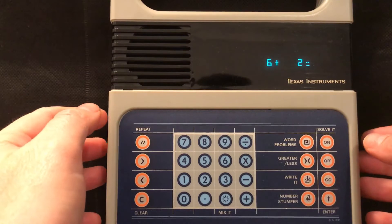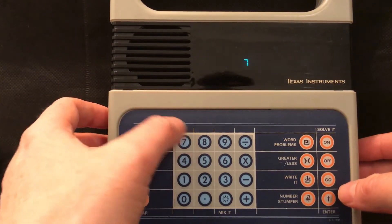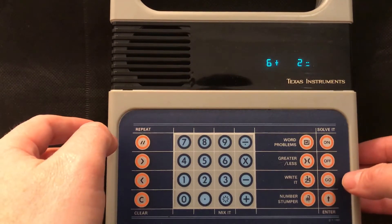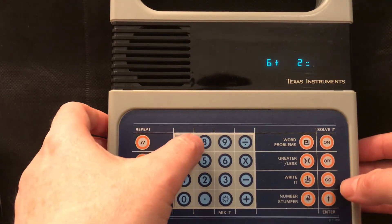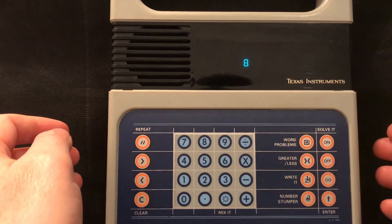Now try six plus two is what? Let's say we get that one wrong and we say it's seven. Wrong. Try again. Six plus two is what? Oh it's actually eight isn't it? So it gives you a chance to try again.